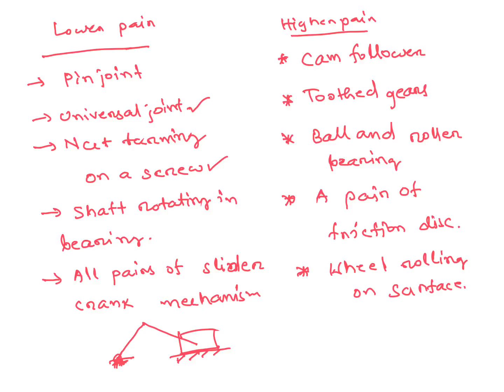Examples of higher pairs are: cam and follower, tooth gears, ball and roller bearings, a pair of friction discs, and a wheel rolling on a plain or flat surface.